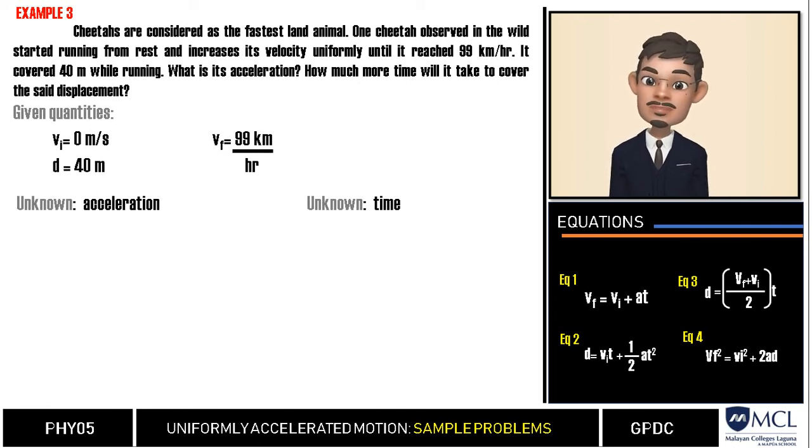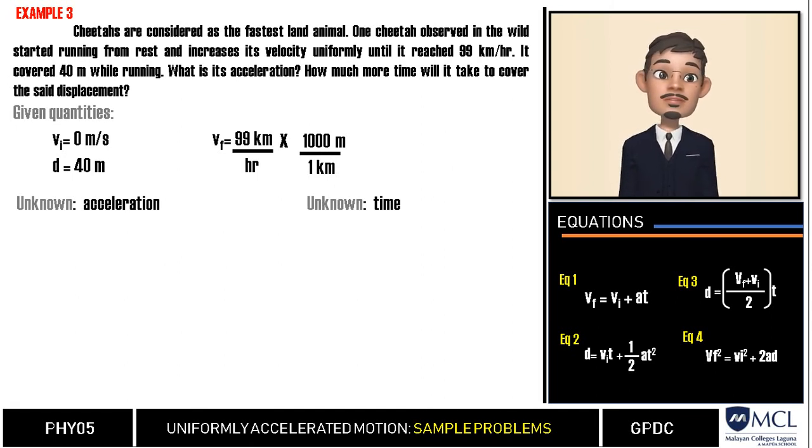Notice that our given final velocity is 99 kilometers per hour, so we need to convert this first to meters per second. If you remember from our previous discussions about unit conversion, we will multiply 99 kilometers per hour by 1000 meters over 1 kilometer, which is our first ratio. We will cancel the unit kilometer and leave meter. We still need to convert hour to seconds, where there are 3,600 seconds in 1 hour.